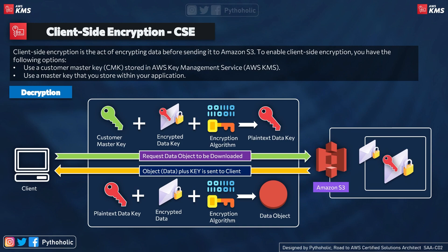Now let's see how decryption works. Just as in encryption, the encrypted data key and encrypted object were stored in S3. When you make a request for the object, you receive the encrypted data key back from S3. You then take the customer master key and the encrypted data key to generate the plaintext data key. Using the plaintext data key and the encryption algorithm, you decrypt the encrypted data and retrieve the original data object. That's how encryption and decryption work end to end.